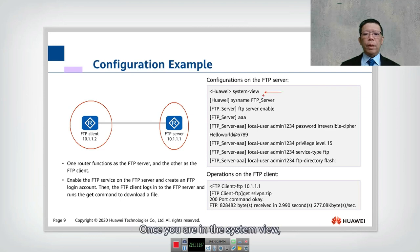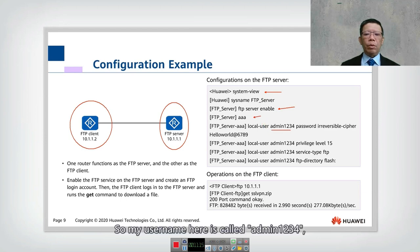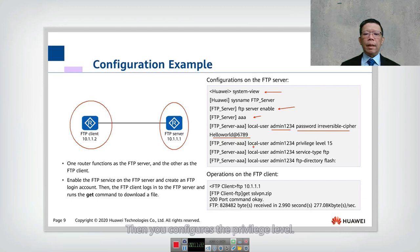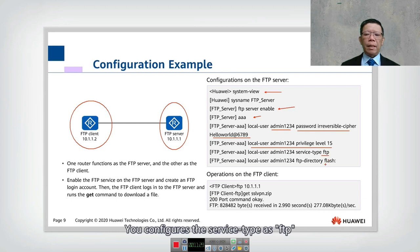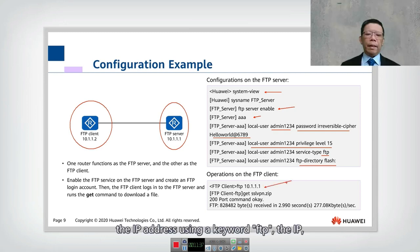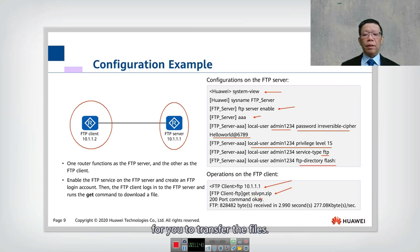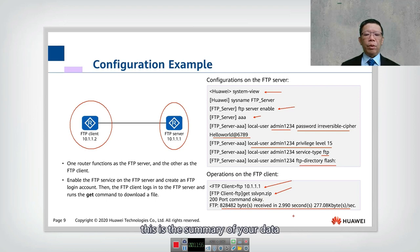In the full configuration example: enter system view, run 'ftp server enable', go to AAA, create local user 'admin1234' with password 'helloworld@6789' (irreversible cipher), set privilege level 3-15, set service type FTP, and assign the flash directory. On the client side, use 'ftp <IP address>' and then 'get sslvpn.zip' to download the file. A transfer summary is displayed on successful download.